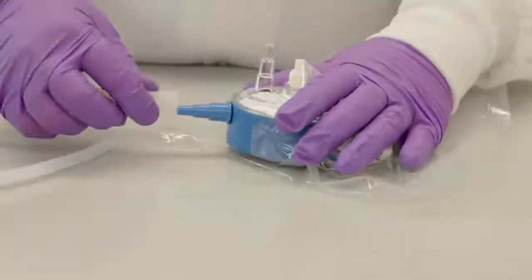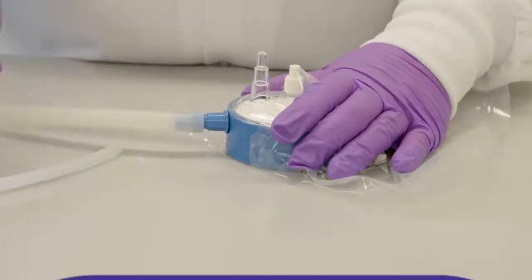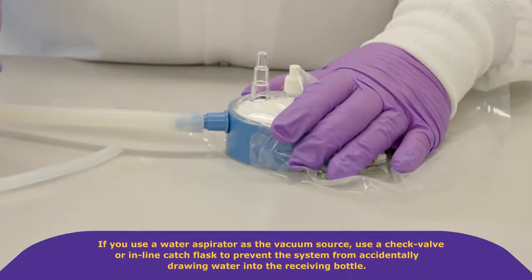Attach the blue vacuum port on the side of the unit to a regulated vacuum source. If you use a water aspirator as a vacuum source, use a check valve or inline catch flask to prevent the system from accidentally drawing water into the receiving bottle.